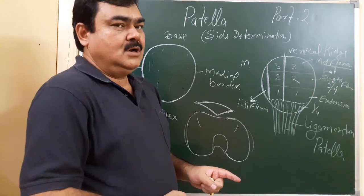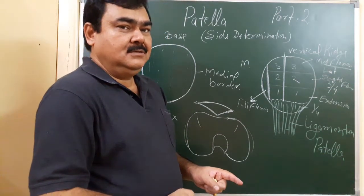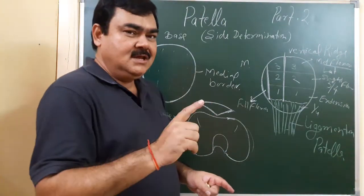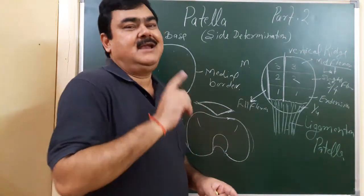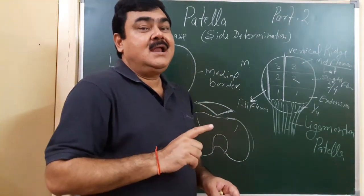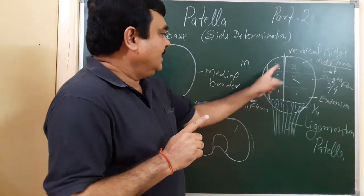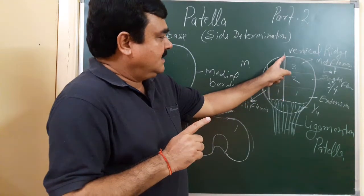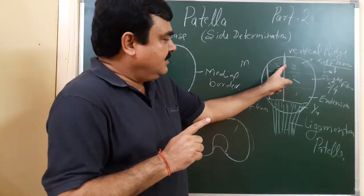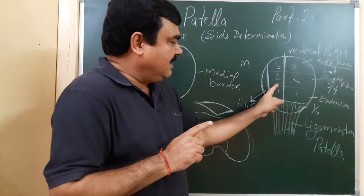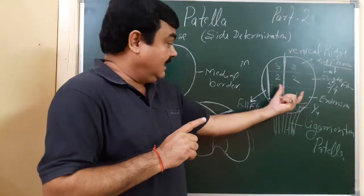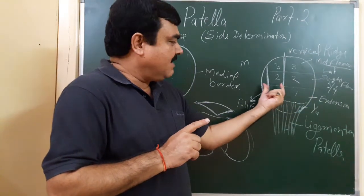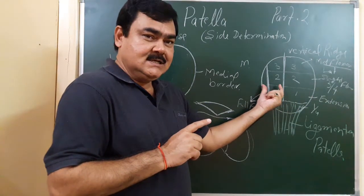Keeping these things in mind, you can easily determine the side. Another thing: the posterior surface is divided by a vertical ridge into a lateral part and a medial part. The lateral part is larger and the medial part is smaller.